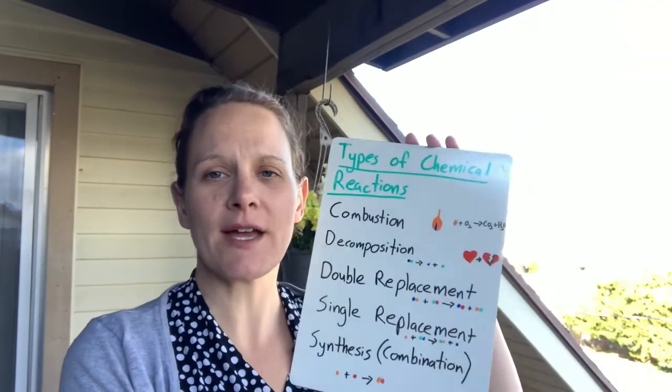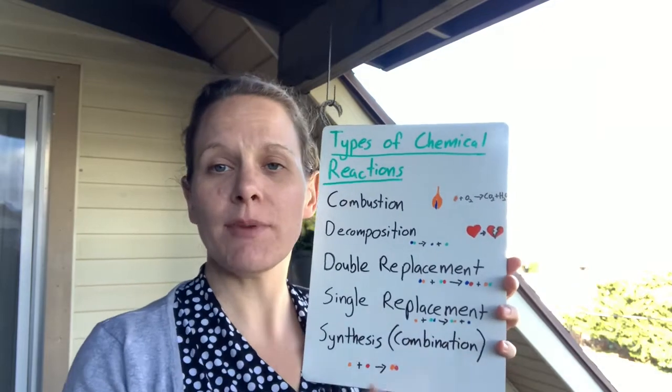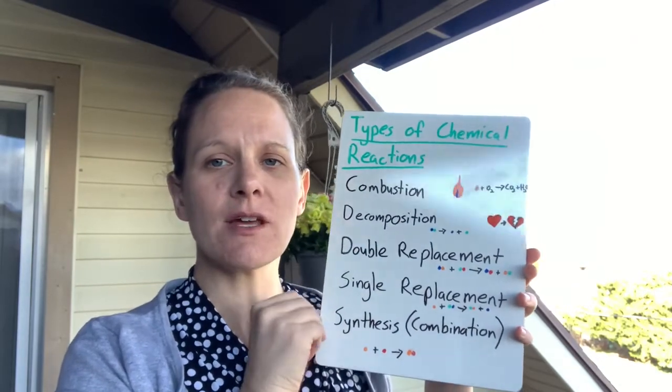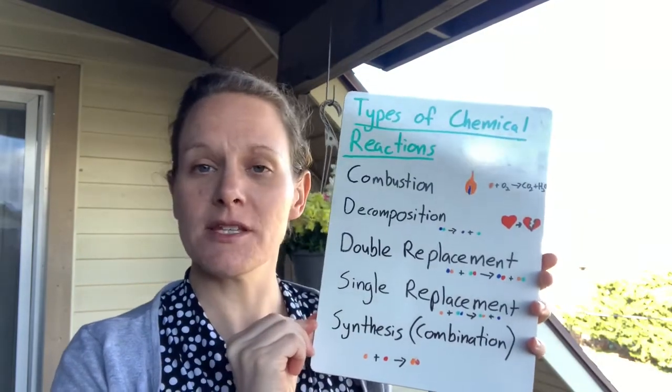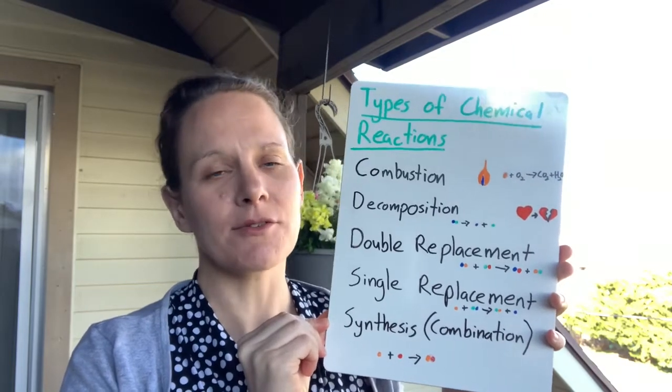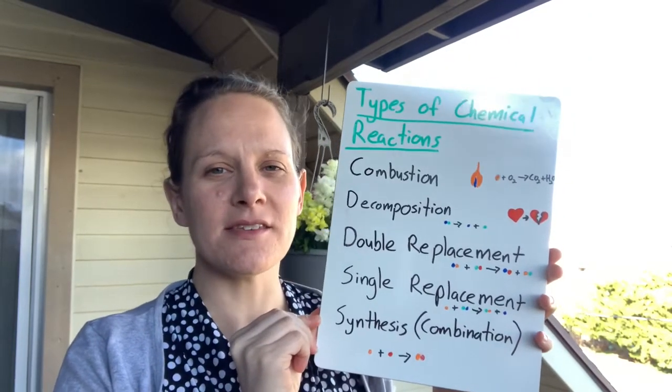When it comes to chemical reactions, there are five main types we're going to address. There's combustion, decomposition, double replacement (also called double displacement), single replacement (also single displacement), and synthesis.